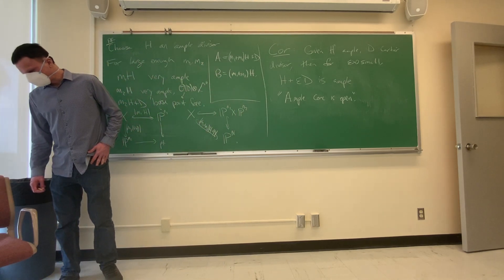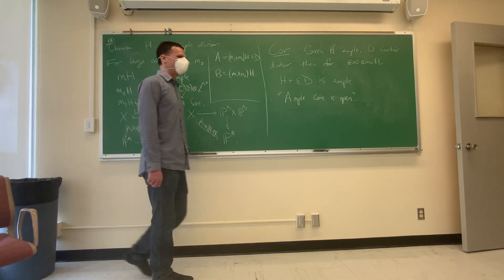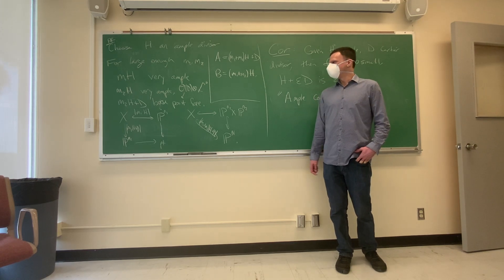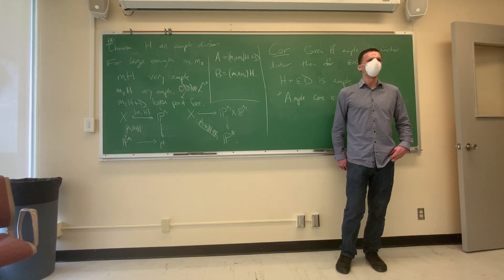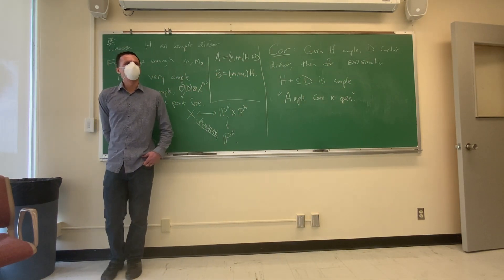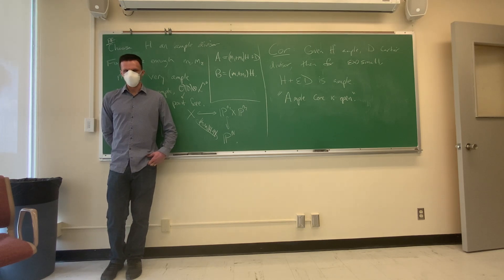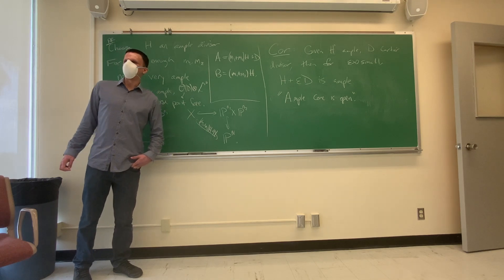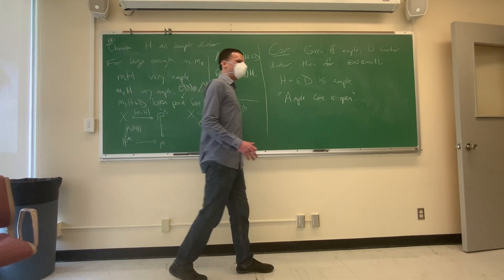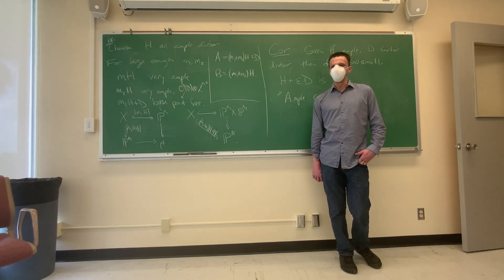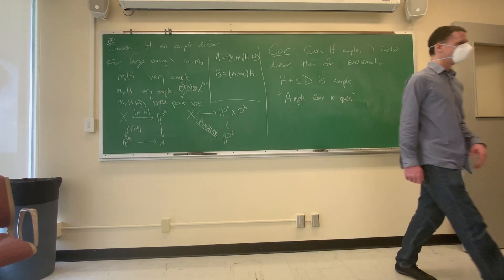The two numerical statements about ample divisors I want to discuss today: first, the Kleiman criterion for ampleness, which says the nef cone is the closure of the ample cone and the ample cone is the interior of the nef cone. This boils down to saying you just have to test ampleness on curves. To get there, we need the Nakai-Moishezon criterion, which relates being ample with being positive — I'll state that one next.